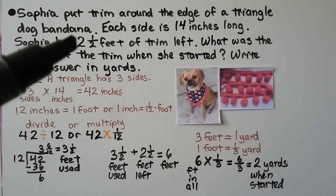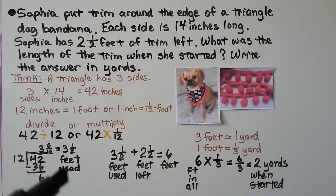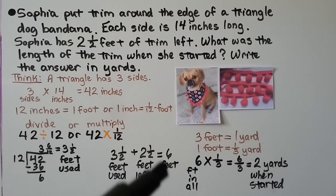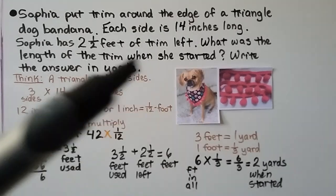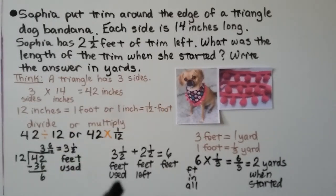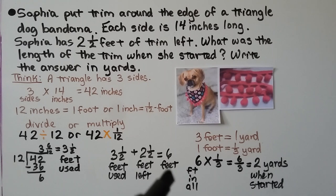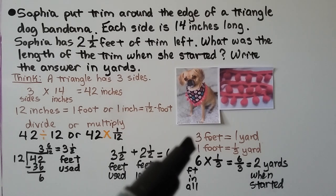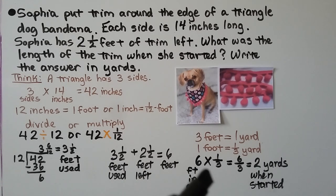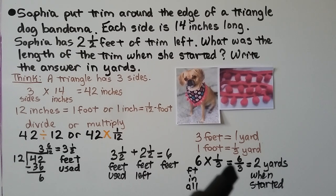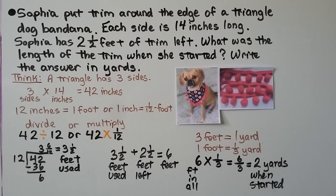She had two and a half feet of trim left over. We add the three and a half feet she used to the two and a half feet left over to get six feet total — that's what she started with. Now we do six divided by three, or six times one-third since each foot is one-third of a yard, giving us six-thirds, which equals two yards when she started.